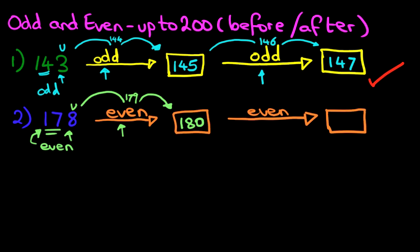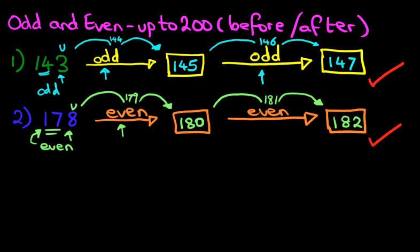Now did you see how we did that? We're going to do it again. 180 — we're going to go forward by one more, and that should give us the second answer. So 180, count forward by one, is 181. Count forward by one more, is 182. We started at 178, that was an even number, and because we're looking at even numbers we counted forward by two: 178 became 180, and that became 182. We're going to give this one a nice big tick.